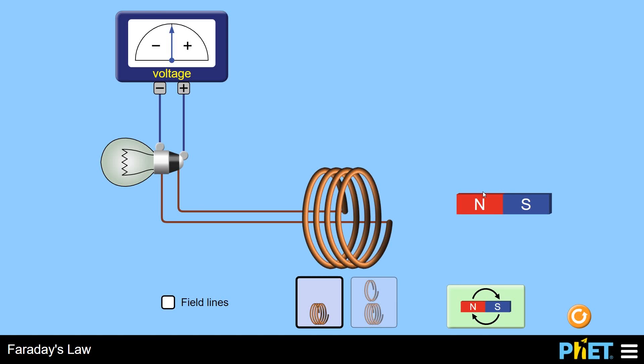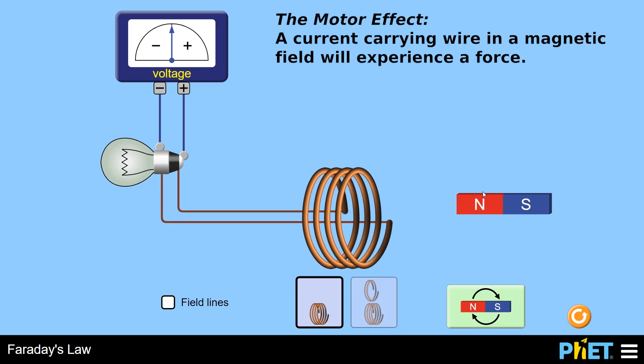In the past few videos we've been looking at the motor effect. The motor effect is just if you take a current carrying wire and you place it inside a magnetic field, then that wire will experience a force.